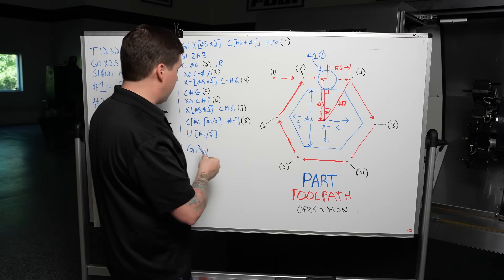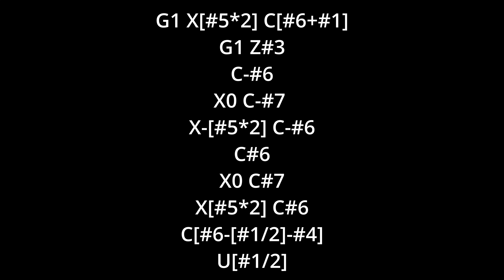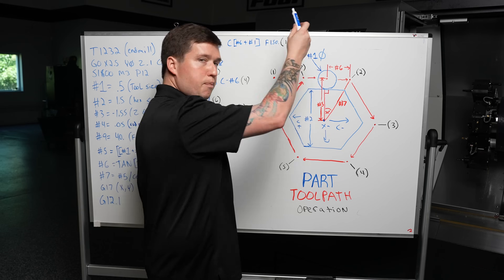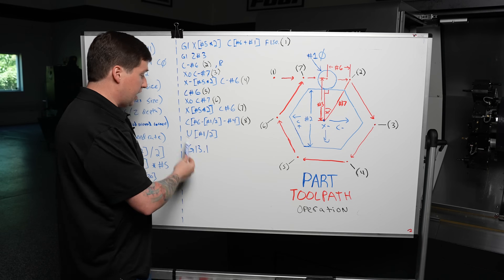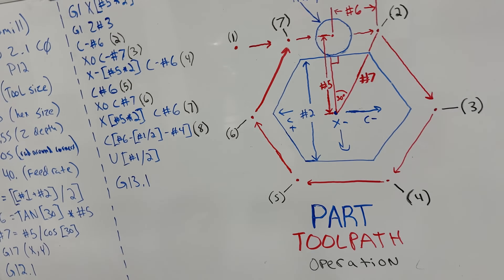Then I say U of pound one divided by two — just move up half your tool radius in X. And then I cancel polar interpolation with G13.1. You can take everything I just showed you and program a hexagon on your lathe using polar interpolation — no problem now.